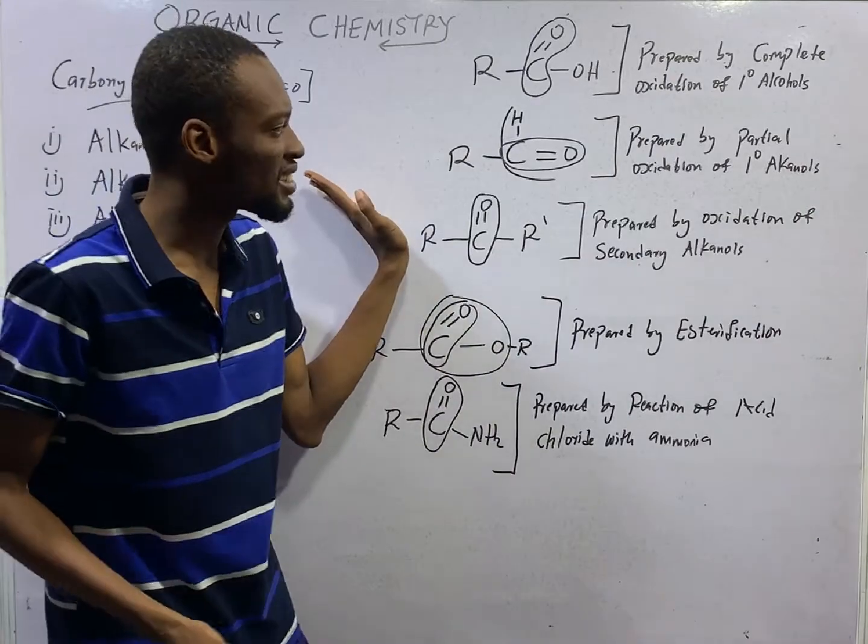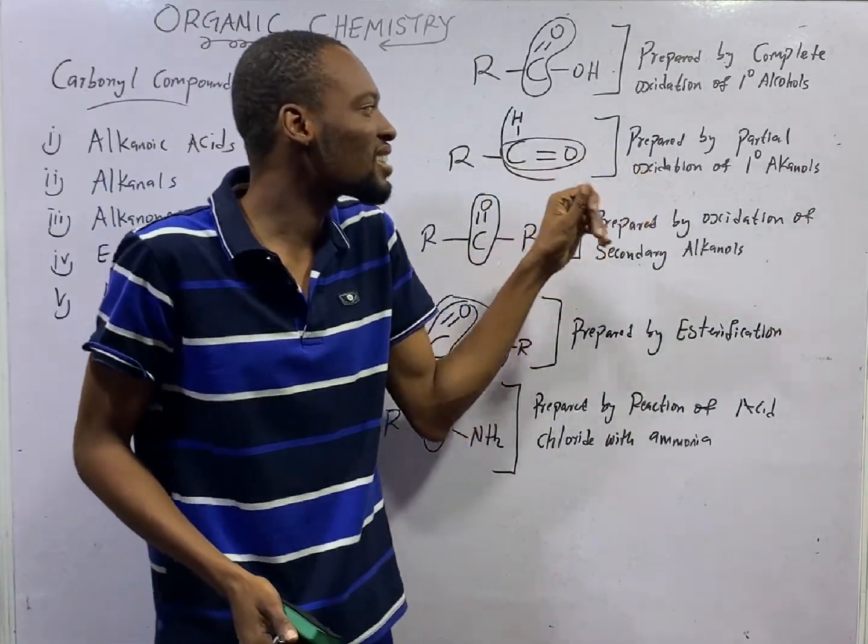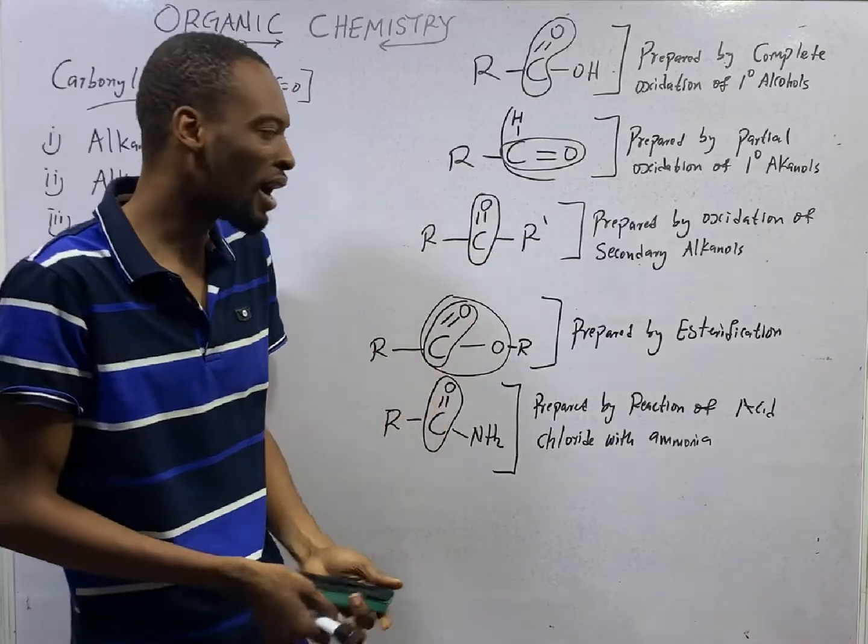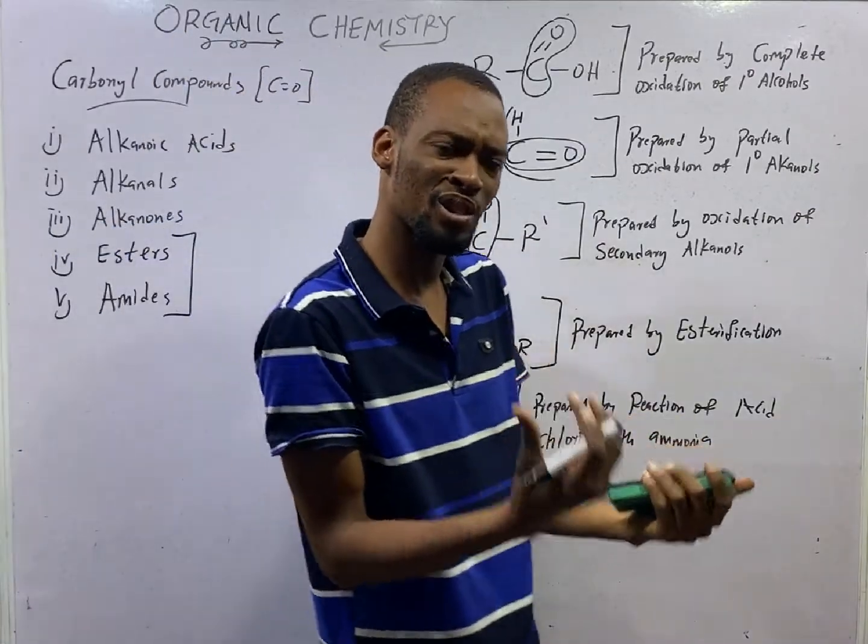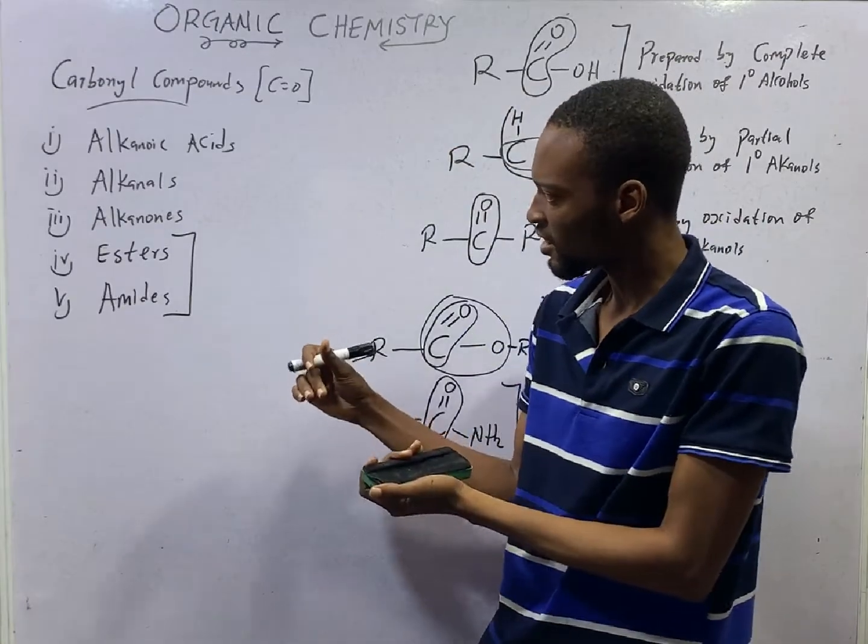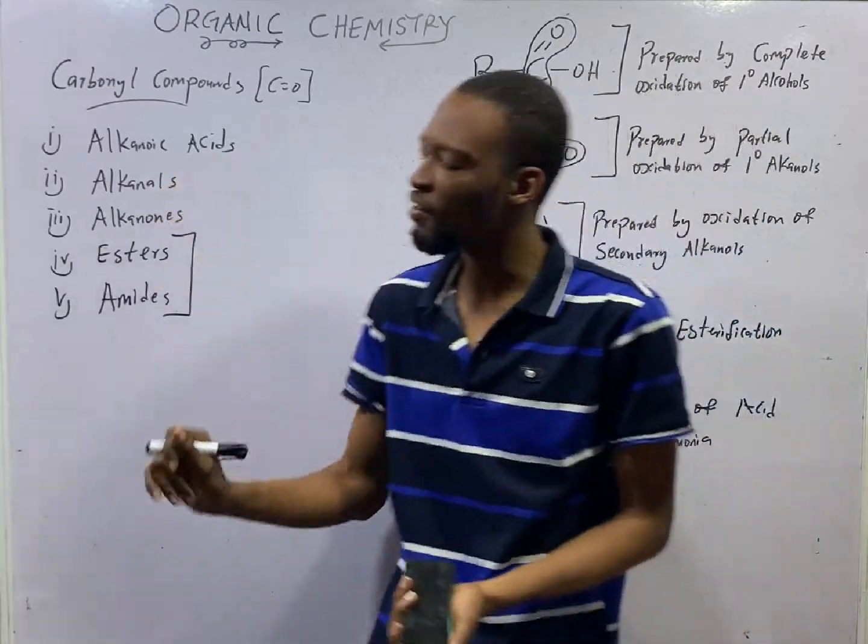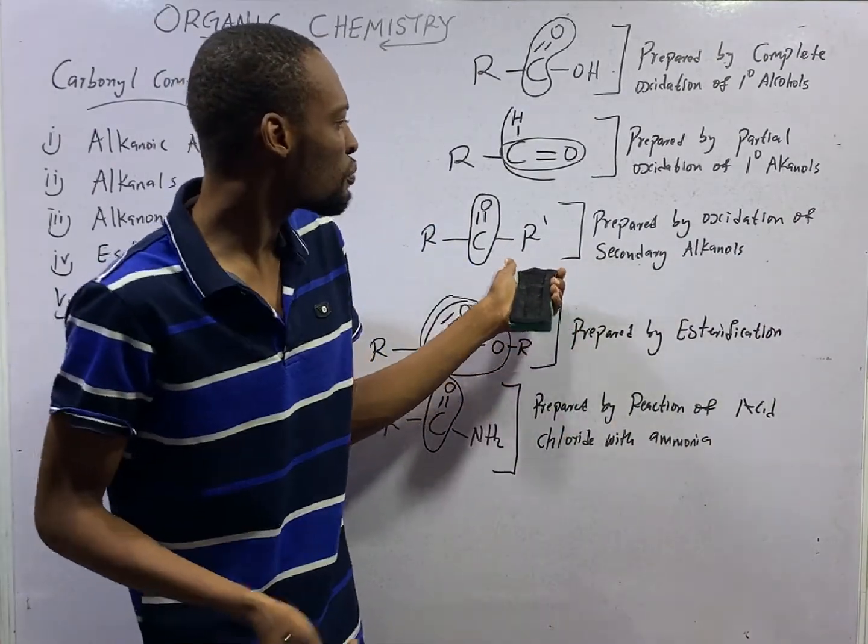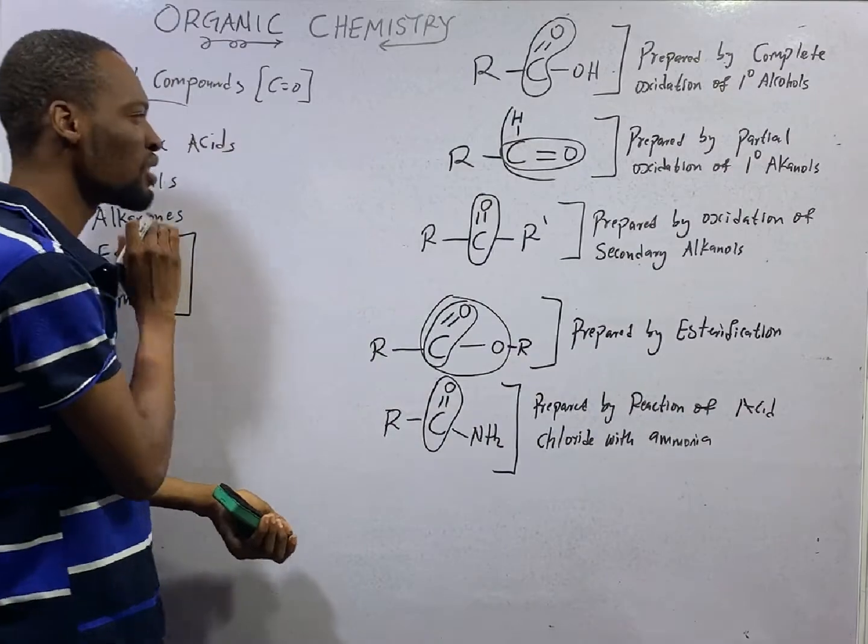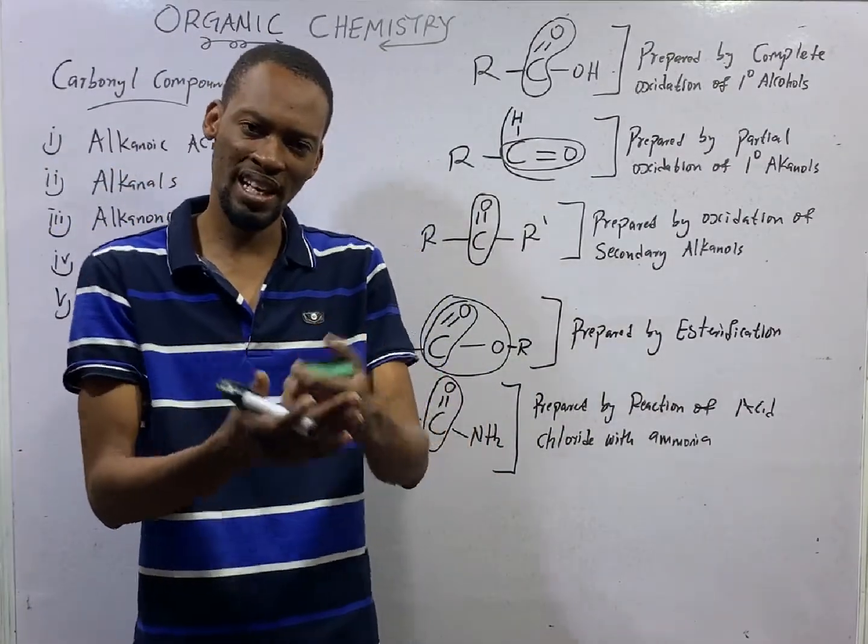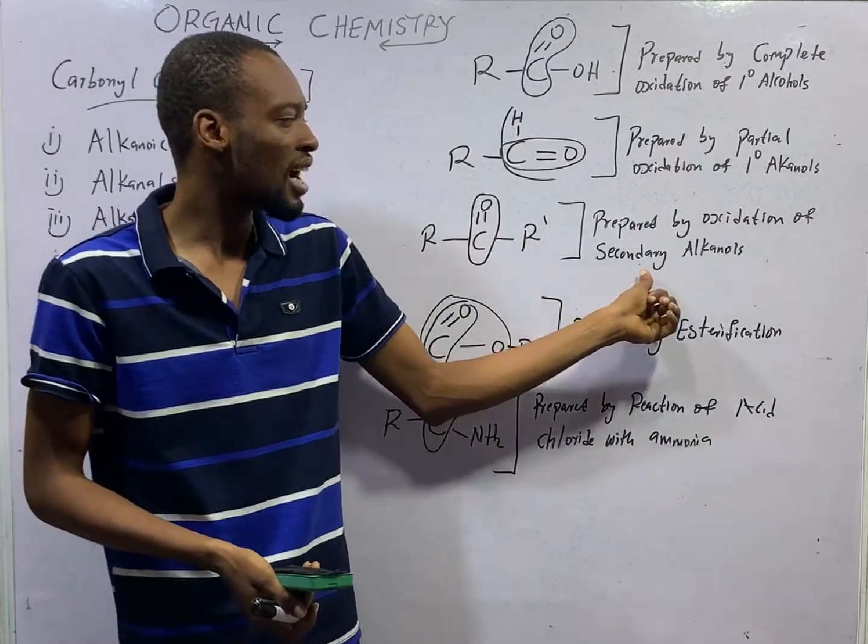To prepare alkanals, we oxidize primary alkanols partially. Remember, we said that partial oxidation of primary alkanols will give alkanals. So, this is a method of preparing alkanal. Then, we said that to prepare alkanones, we oxidize secondary alkanols. Oxidation of secondary alkanols will give you alkanones.